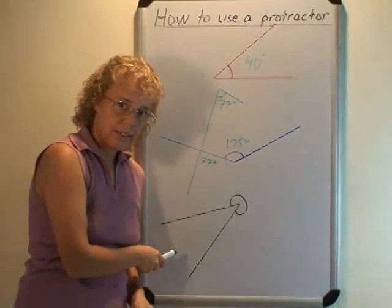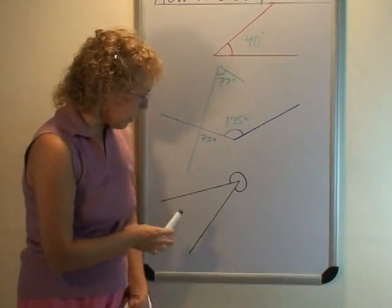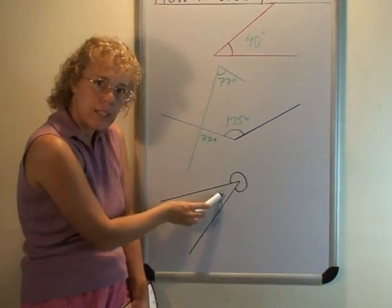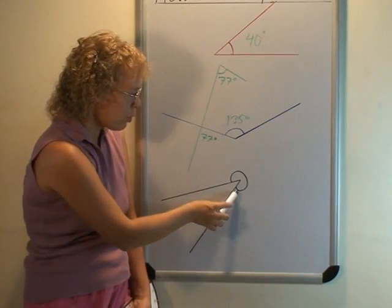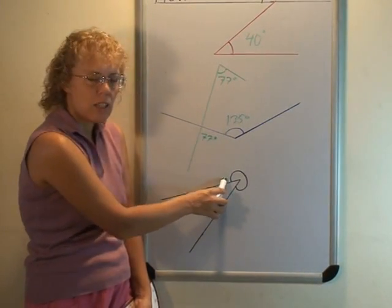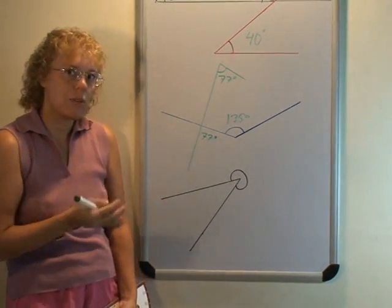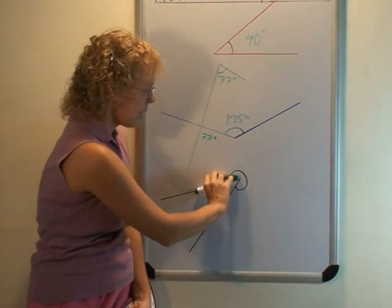And the last angle here is kind of interesting. We are not actually measuring this part here, this angle, this acute angle. We are supposed to measure this angle here. It's called a reflex angle because it's more than 180 degrees. It's this angle here.